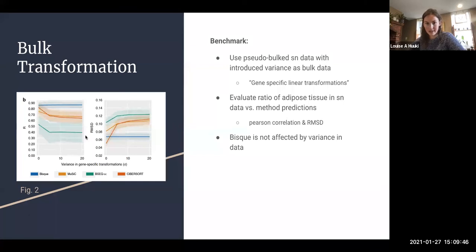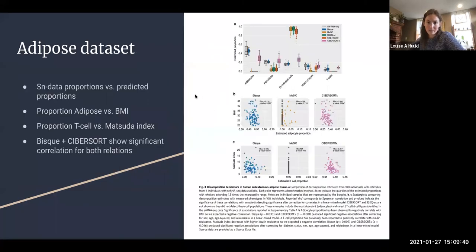Then they get into what an actual use case for these methods would look like, which is fully predicting what are cell type proportions. In figure 3a at the top here, again they're comparing single nucleus data proportions to the predicted proportions of the cell types.